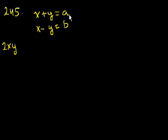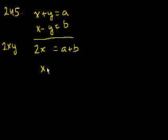Let's solve for x and y in terms of a and b, and then figure out what this equals. So we have two equations with two unknowns. Let's add them together to solve for x. We get 2x, the y's cancel out, is equal to a plus b, or x is equal to a plus b over 2.